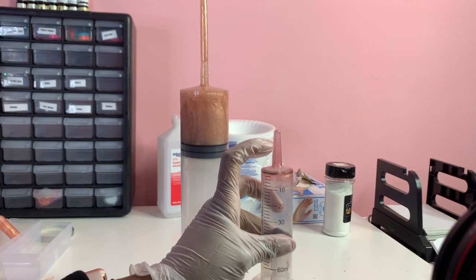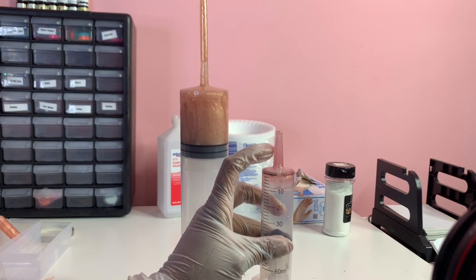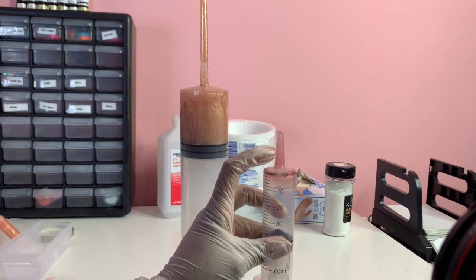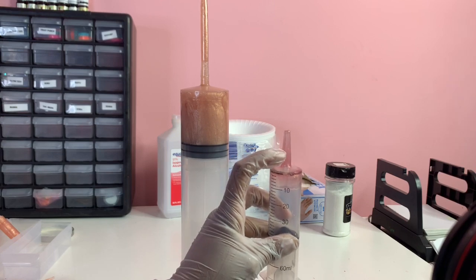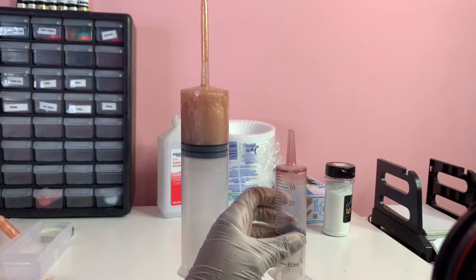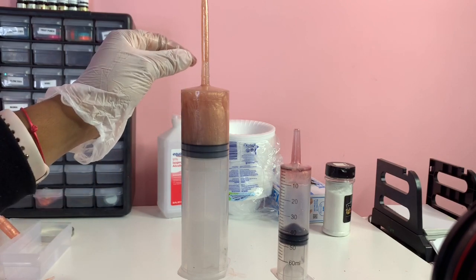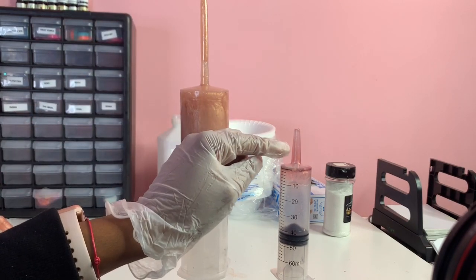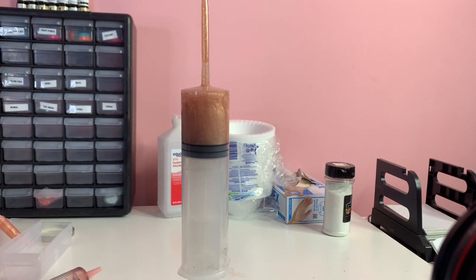On the bigger syringe, the top is shorter and it kind of restricts the gloss from coming out. So what you want to do is cut a piece of that off to make it easier for your gloss to flow through, because I feel like the hole that came provided with it restricts the gloss from pouring out, which makes it really hard to press down on it.